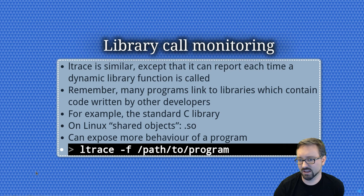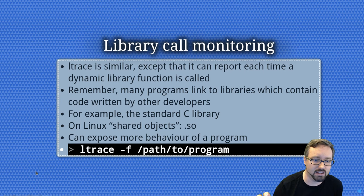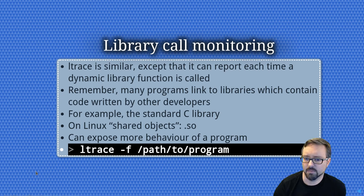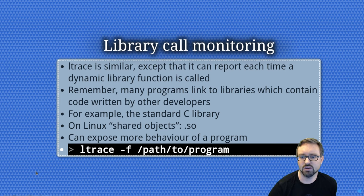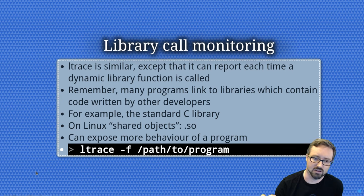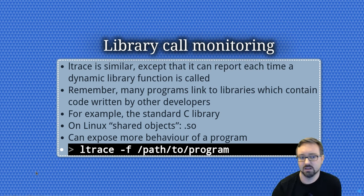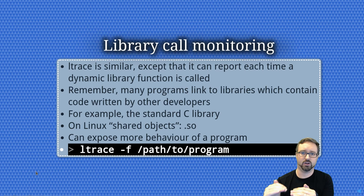Library call monitoring is similar to system call monitoring, except it reports each time a dynamic library function is called. Programs link to libraries containing code written by other developers — for example, the standard C library has many commonly used functions. On Linux these are shared objects. Library call monitoring can expose more behavior and is often easier to make sense of than system call monitoring. For example, you might see a library call comparing two strings, which is closer to the program's actual behavior than a raw system call.